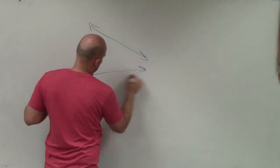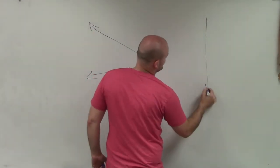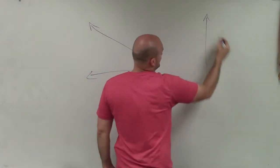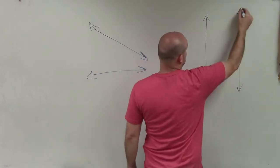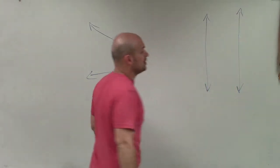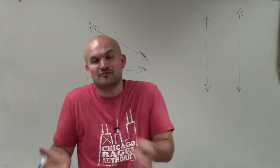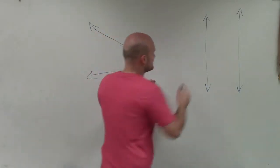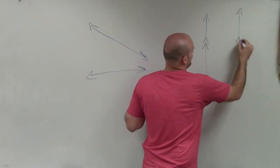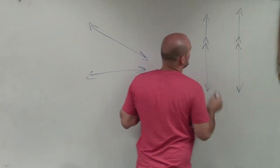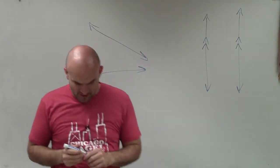We can have two lines that look like this, or we can have two lines that look like this. You might say those look like they're parallel, but we can't assume or confirm that they're parallel unless we are told that they are. So now I say we have two parallel lines.